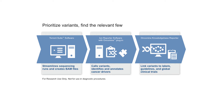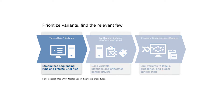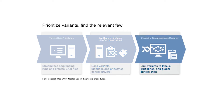As the data goes from sequencer to report, there are three main stops it will make on its post-sequencing analysis journey. First, Torrent Suite software streamlines the sequencing runs and automates analysis transfer to Ion Reporter. Second, Ion Reporter software calls variants and annotates cancer drivers. And last, Oncomine Knowledge Base Reporter helps link variants to relevant labels, guidelines, and global clinical trials.